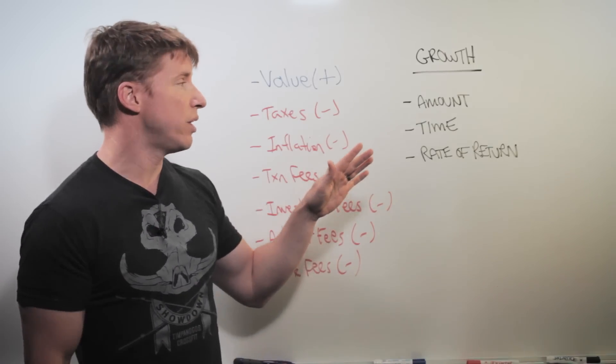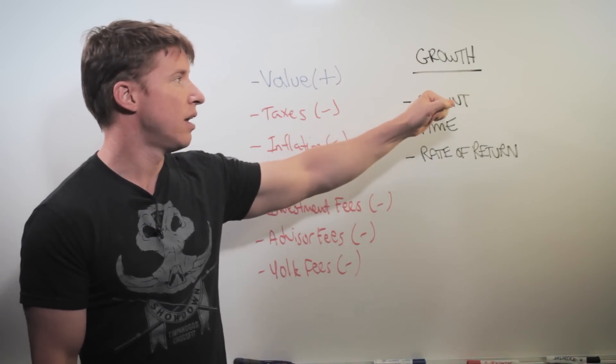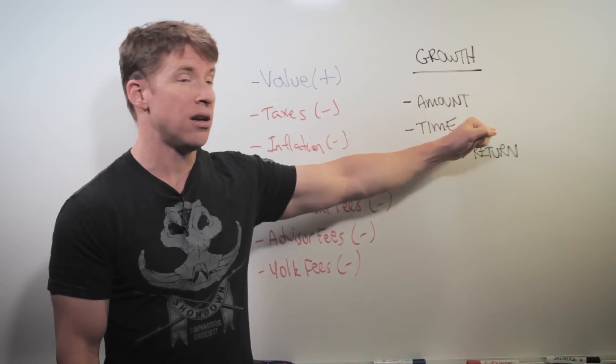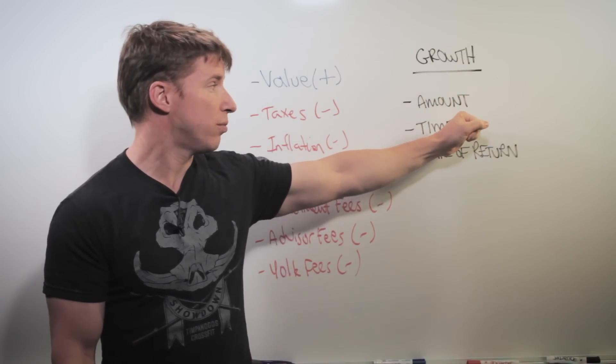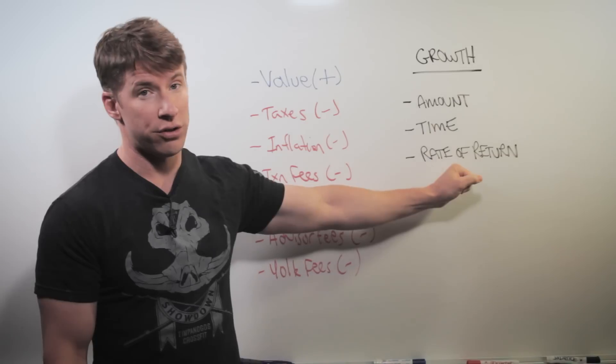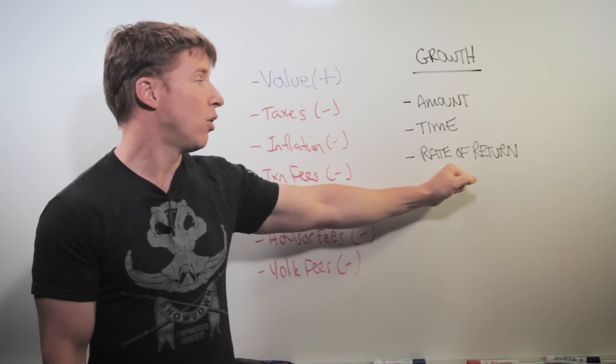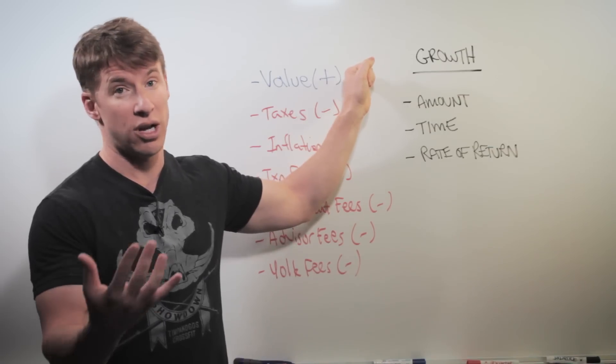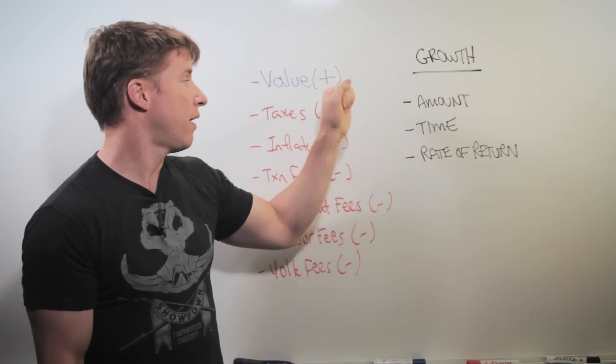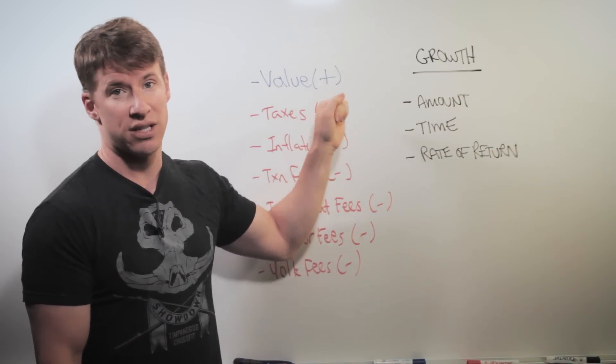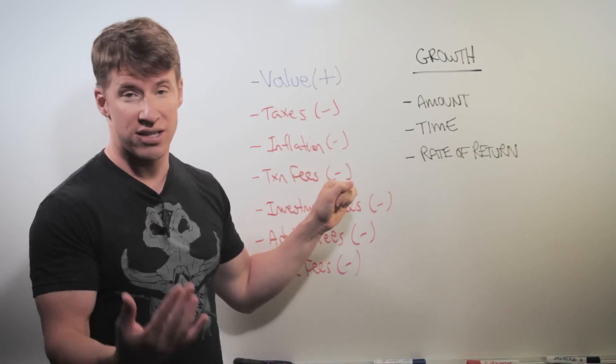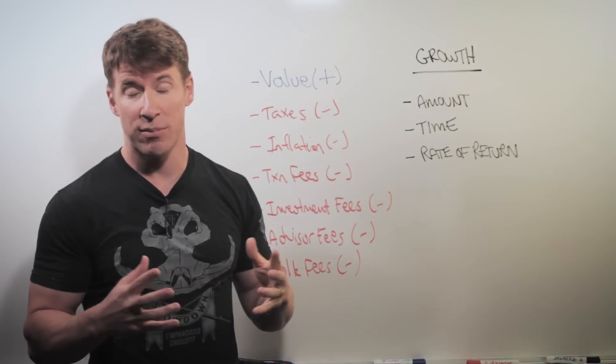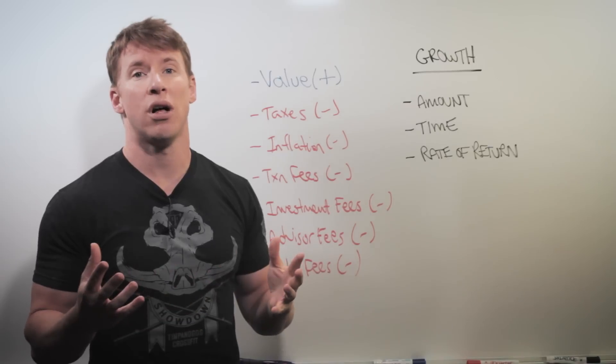So today, just to do a quick recap, we talked about growth last week, and your nest egg grows faster with more money, grows larger with more time, and it grows larger, obviously, with a higher rate of return. The only positive to a rate of return is the value of the asset increasing, what someone else is willing to pay for it, and then finally, you have all of these negatives: taxes, inflation, transaction fees, investment fees, advisor fees, 401k black box fees. Be aware of all of them.